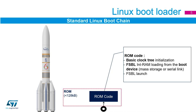The ROM code does basic clock tree initialization to get the device up and functional for internal RAM, and it also initializes the particular boot methods available for the STM32MP1 — be it eMMC, serial link, SD card, and things like that. That's what's programmed inside the ROM code so we can then launch our first stage bootloader.